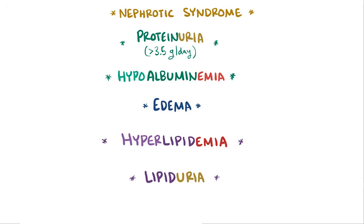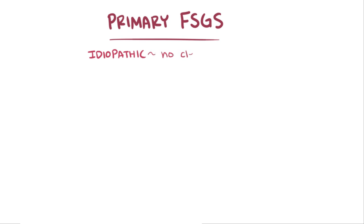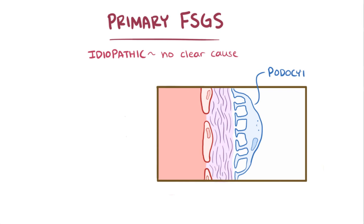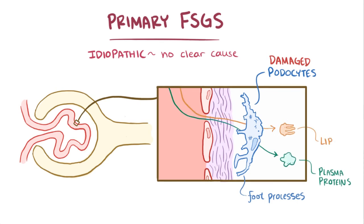So FSGS is a type of nephrotic syndrome, but why does the glomerulus develop segmental sclerosis in the first place? Well, primary FSGS is when it's idiopathic, or there's no clear underlying cause. What is known though is that the podocytes, which are the cells that have these long tentacle-like projections called foot processes that wrap around the capillaries in the glomeruli, are damaged. These damaged podocytes allow some plasma proteins and lipids to sneak by, which then go on to get into the urine.